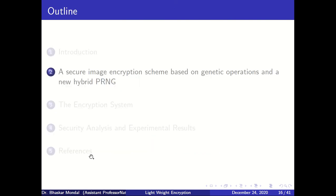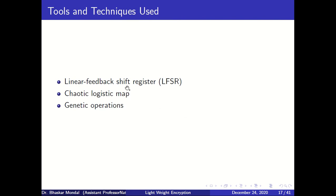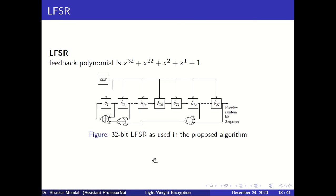Now I'm going to show another algorithm in which we used the LFSR, the chaotic logistic map, and genetic operations. This algorithm is a little more complex than the previous one and follows a block cipher structure. This is an example of a Linear Feedback Shift Register (LFSR), which can be represented by a polynomial — here of order 32, meaning it has 32 flip-flops.